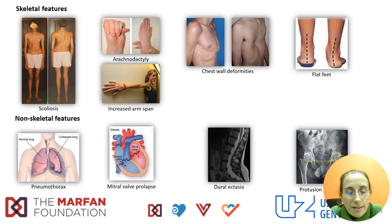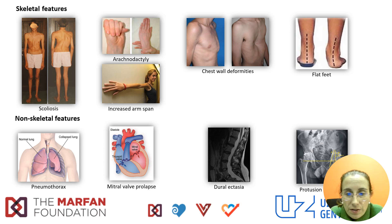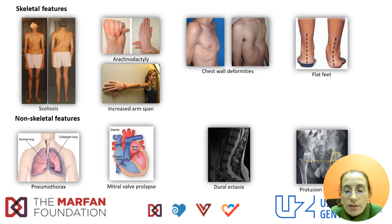Besides the skeletal features, patients with Marfan syndrome might have recurrent pneumothorax and mitral valve prolapse in addition to aortic root dilatation. They can also present with dural ectasia and protrusio acetabuli.